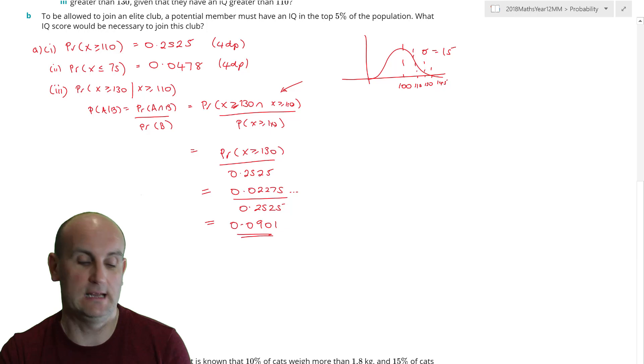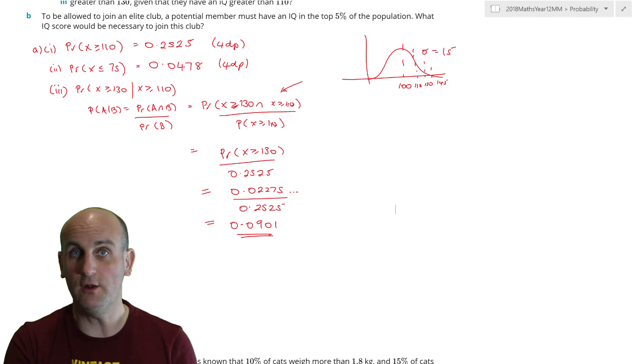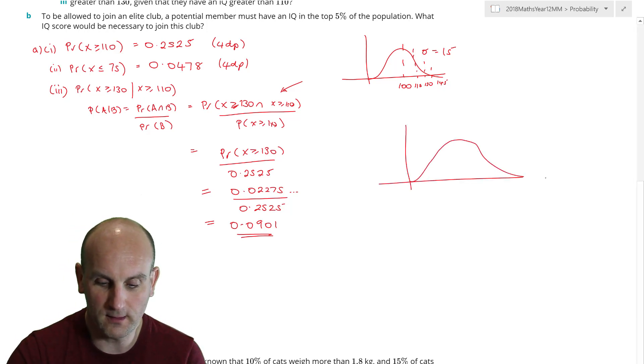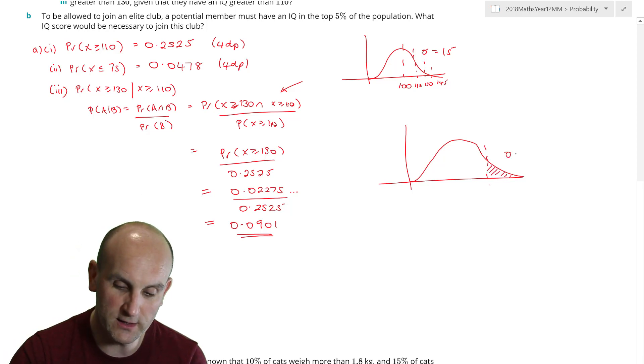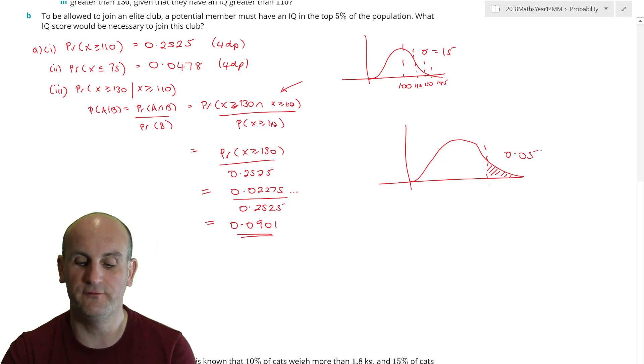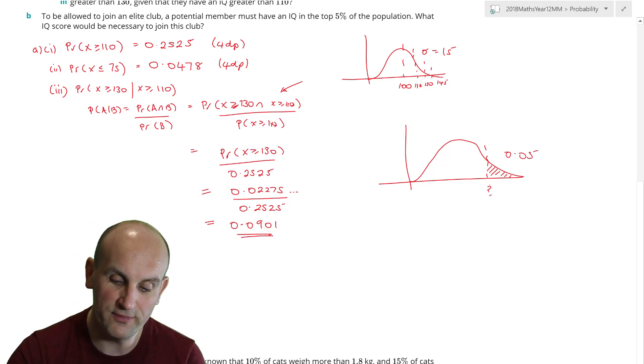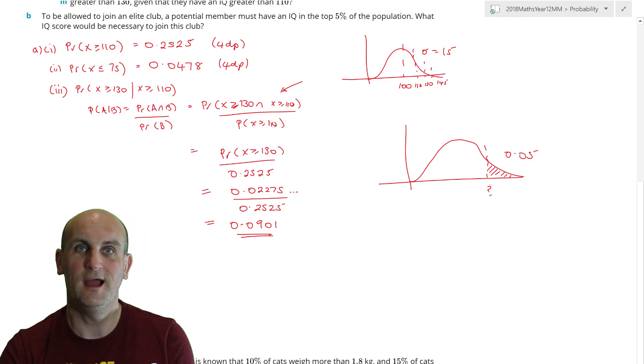To go back to my question, to be allowed to join an elite club, a potential member must have an IQ in the top 5% of the population. What IQ score would be necessary to join this club? When I look at this question, I'm like, hold on a moment. You've given me a percentage. You've given me a probability. Something in this graph, I now know. Drawing a quick sketch. I now know because the question is saying to me, it wants the top 5% of my population. So I know that value there is 0.05. We are trying to find this value here and what it turns out to be.